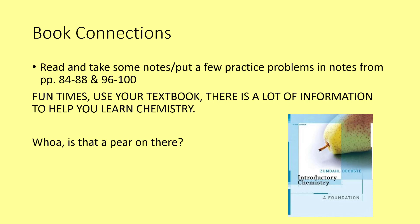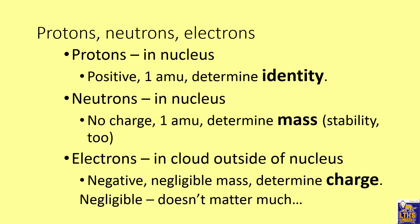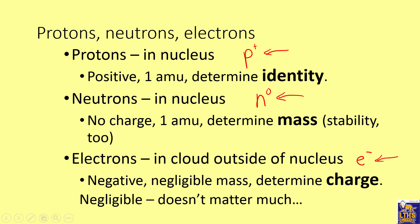You saw this slide earlier in a different PowerPoint, but now you're seeing it again. Sometimes when I write the symbol for a proton I put P-positive, neutrons I sometimes put N with a not-sign for no charge, and electrons sometimes I put a negative. We'll be using that shorthand to remember this information.